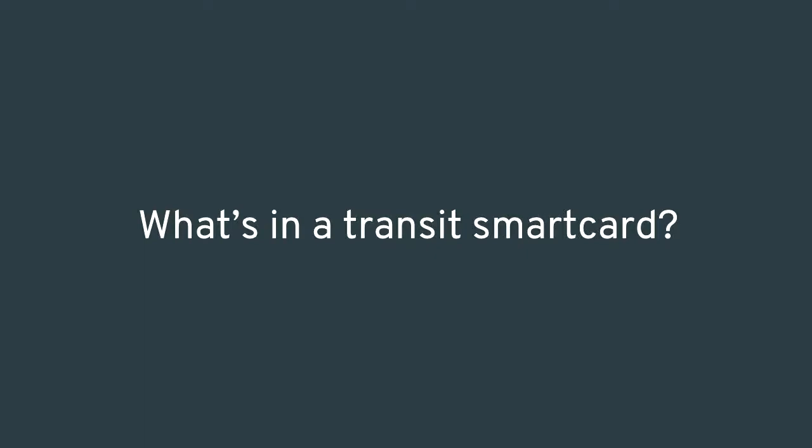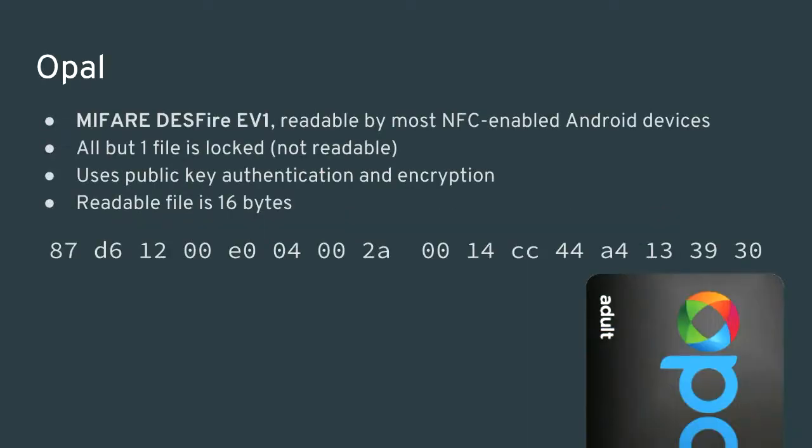I'd like to get access to the data on the card itself and do this anywhere without registration. I live in Sydney, so let's start with the Opal card. The Opal card is readable by most Android devices, and all but one of the files is locked. It uses public key authentication and encryption, which is fairly strong. I show an example of that readable file in base-16 encoding — it's 16 bytes long. We don't yet know what this data represents, so we need some facts.